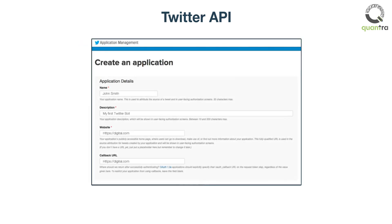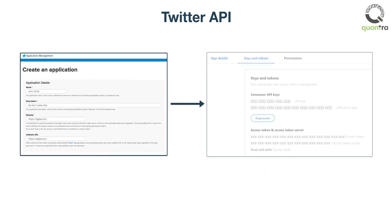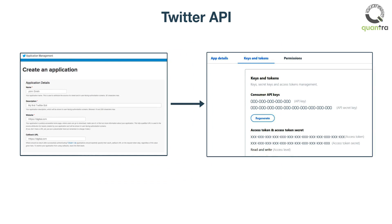In these steps, while creating the application you need to explain how you are going to use the Twitter data. After that, Twitter will process your application and provide you with two sets of keys, namely consumer API keys and access tokens. This can be found in the app details page under keys and tokens.